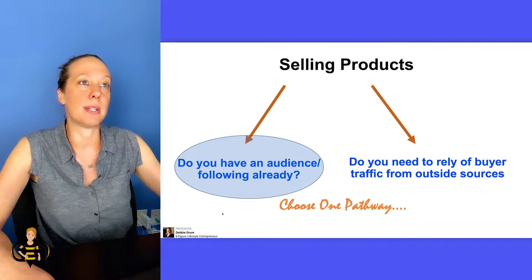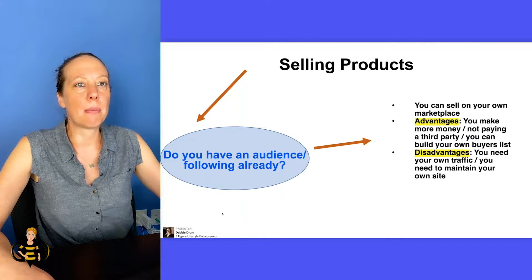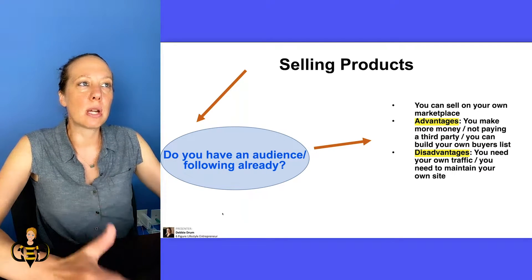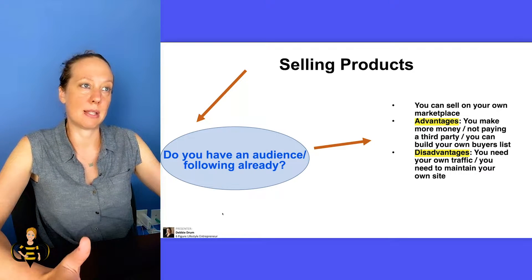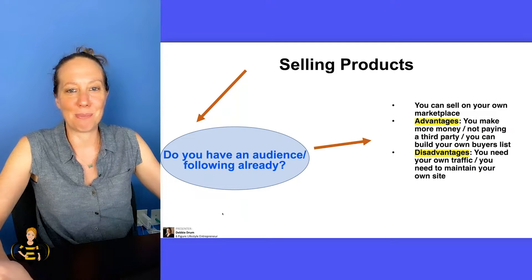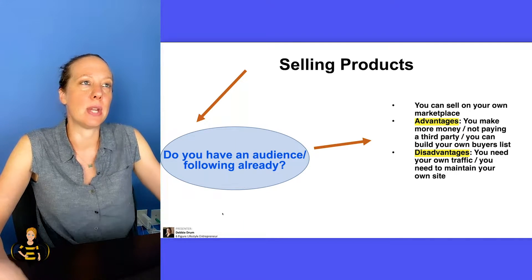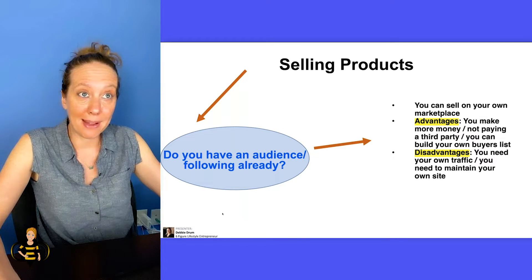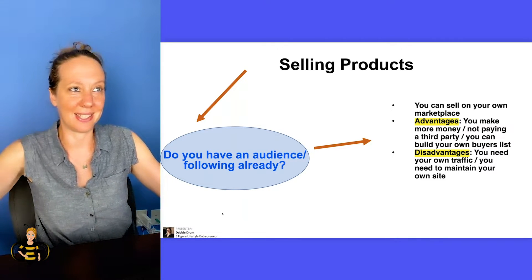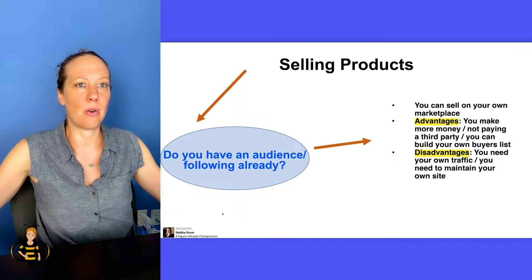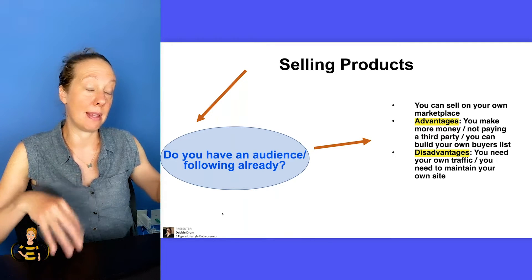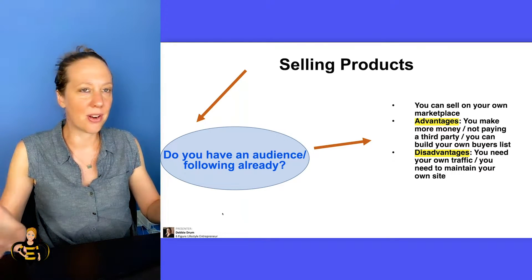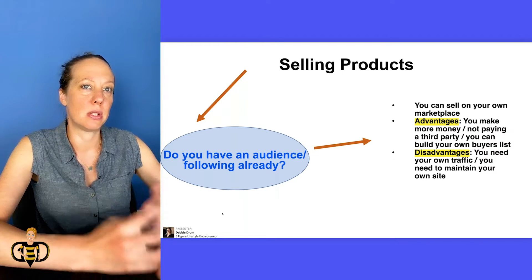So let's say we have an audience and a following already. While you can sell your content on different marketplaces, which we'll talk about, you can also sell your content on your own marketplace. That doesn't mean you have to build your own Etsy or Amazon — it just means you need to build some kind of system where people can purchase from you, you have a buy button, and they can get it delivered and use your product. You'll have to decide: do you want a WordPress site, Shopify, or another type of system to sell your products?